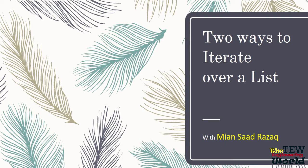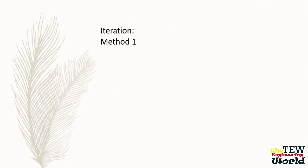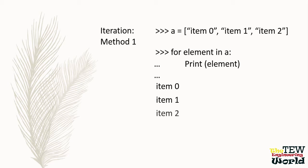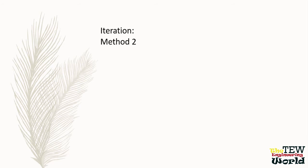Let's quickly go over two different ways to iterate over each element in a list in Python. Let's say we have our list A with the elements item 0, item 1, and item 2. The first way to iterate is: for element in A, print element. This would go through each item in this list and print it out — item 0, item 1, and item 2. That's the first method.